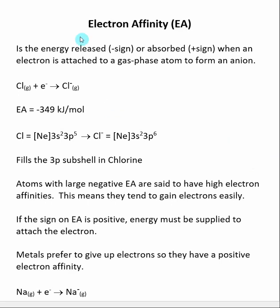Another periodic trend is called electron affinity, and this is the energy that is either released or absorbed when an electron is attached to a gas phase atom to form an anion. We're going to find in certain situations energy is given off, and in other situations energy is being absorbed during this process.